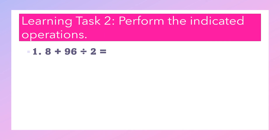Example: 8 plus 96 divided by 2. Using the MDAS rule, what operation comes first? From MDAS, we divide first, then add. So: 96 divided by 2 equals 48, then 48 plus 8 equals 56.